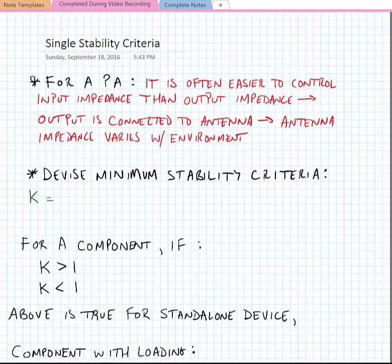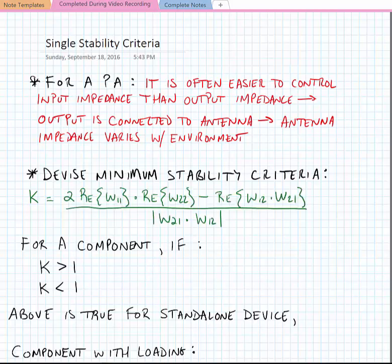The K-factor is given by two times the real part of W_11 times the real part of W_22 minus the real part of the product W_12 times W_21, divided by the magnitude of W_21 plus the magnitude of W_12.